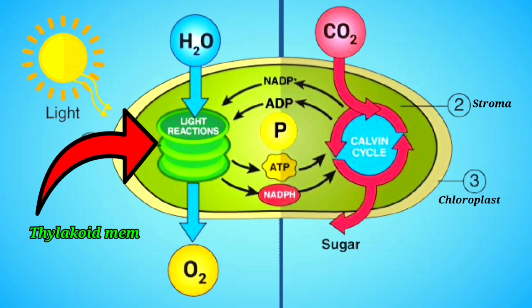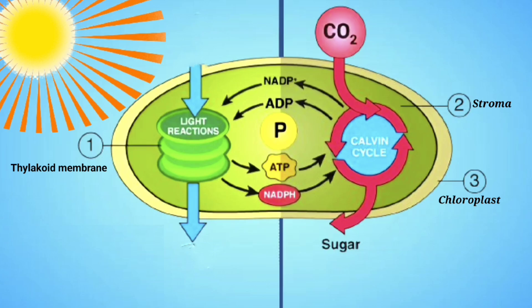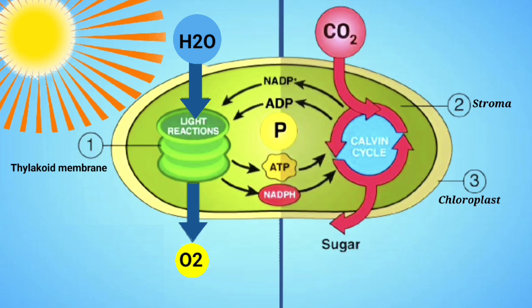The light reaction takes place in the thylakoid membranes of the chloroplasts. When sunlight hits the chlorophyll, it excites electrons, which then split water molecules into oxygen, protons, and electrons. Oxygen is released into the atmosphere, while the electrons and protons are used to create energy-rich molecules — ATP and NADPH — which carry energy to the next stage of photosynthesis.